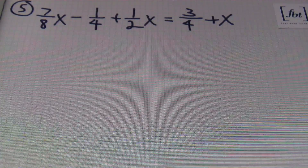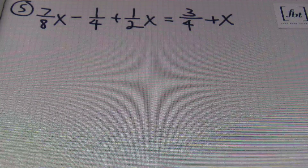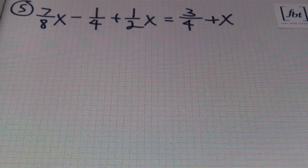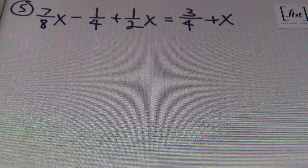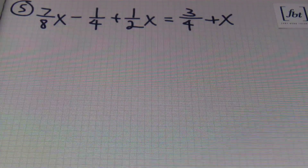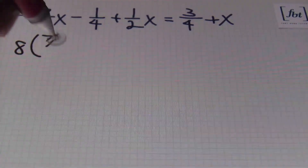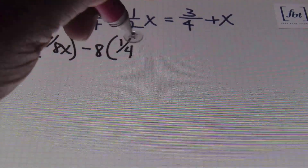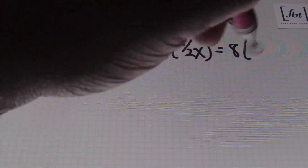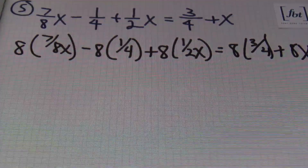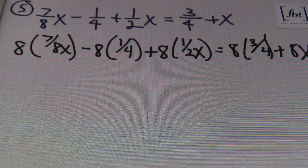I don't like dealing with fractions, so if I can avoid it, I will. I'm going to multiply everything by the lowest common denominator, which is eight. Eight is the first number that eight, four, and two can all go into evenly. Remember: when you're multiplying everything by the LCD, each and every term — regardless of whether it has a fraction or not — must be multiplied by the LCD. So I'll be multiplying by eight each and every term.